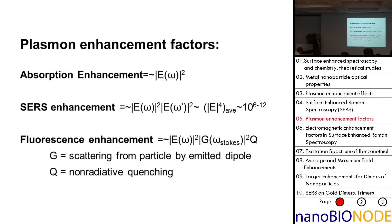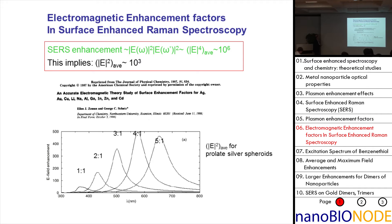Basically, anything that's a spectroscopically active property can be electromagnetically enhanced, and some issues that don't involve light can also be enhanced. There have been various people who tried to estimate these enhancements. We did a paper back in the '80s — but many others did this too — where we tried to calculate the enhancement factors. This is E², not E⁴. We did it for prolate silver spheroids, and we found that if you have an aspect ratio of 4 to 1, you could get values of 500 or so for this enhancement factor.